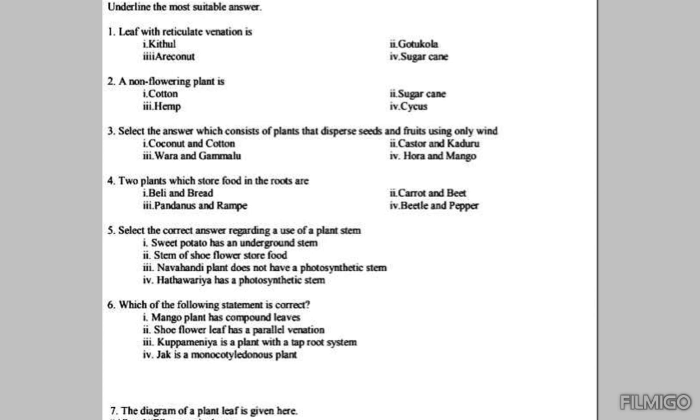Second answer: shoe flower leaf has a parallel venation. No, shoe flower comes under dicot plants. You know all dicots have tap root system and also they have reticulate venation.